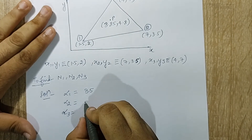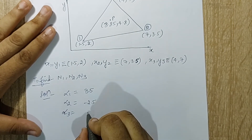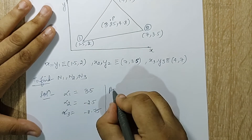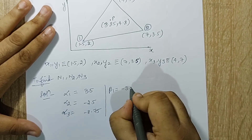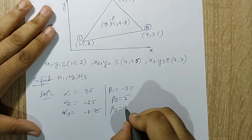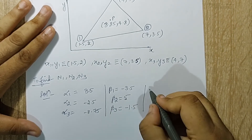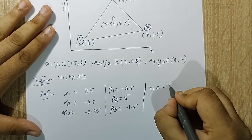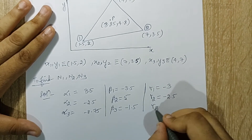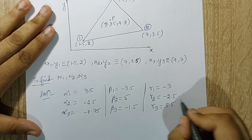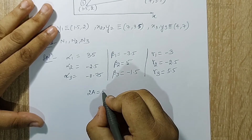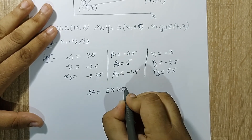Alpha 1 is 3.5, alpha 2 is minus 2.5, and alpha 3 is minus 8.75. Beta 1 is minus 3.5, beta 2 is 5, beta 3 is minus 1.5. Gamma 1 is minus 3, gamma 2 is minus 2.5, and gamma 3 is 5.5. Next I calculate 2A — you know how to do that by now — so this is 23.75.